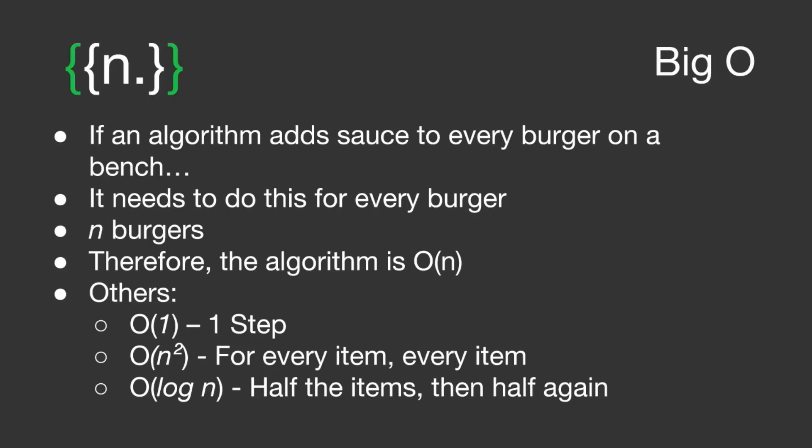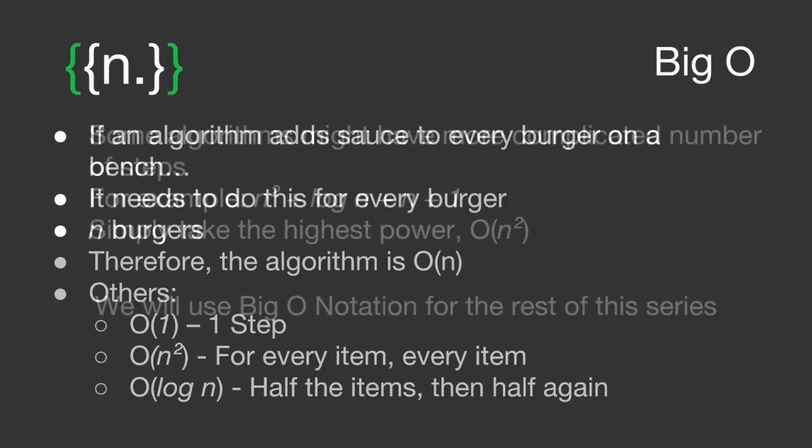There are some other common orders. Order 1 means it happens in one step. Order n squared means it happens to every item and then every other item for that item. And maybe order log n, which means we take half the items, then half again, and then half again, back down to one item.